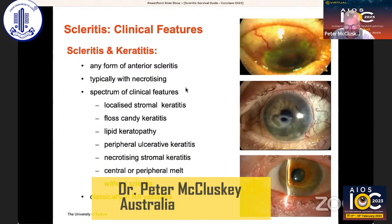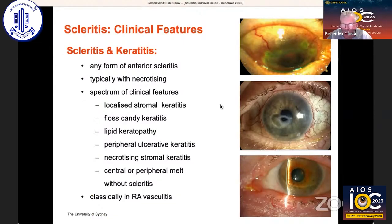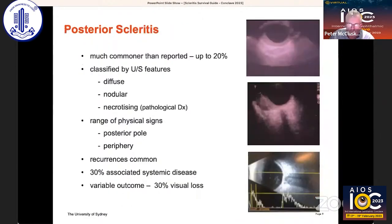Keratitis is a very common association with scleritis, and it can range from very localised forms to severe widespread necrotising forms of scleritis and melts, which are a severe threat to vision. These very commonly occur in rheumatoid arthritis and ankylosing spondylitis.